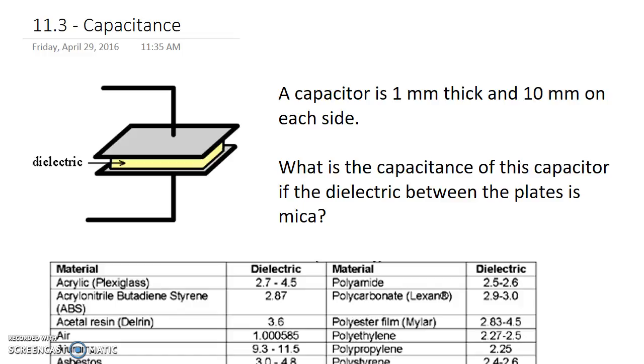The capacitor is 1 mm thick, so that's the distance between the plates, and 10 mm on each side. What's implied here is that it's a square, 10 mm on each side. We want to know what the capacitance of the capacitor is going to be if the dielectric between the plates is mica.